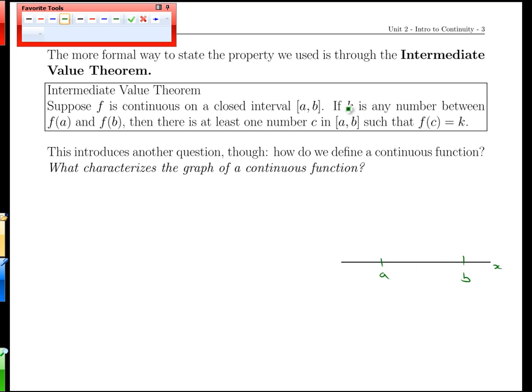Now, this looks very abstract, but we'll walk you through it. If k is any number between f(a) and f(b), so notice that this is what we'd call a y value or an output, not an input, then there's at least one number c in [a,b], so this is an x value, such that when we use the input c, we get the output k.